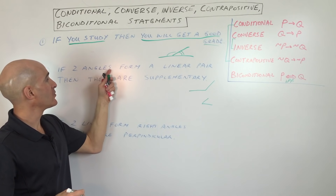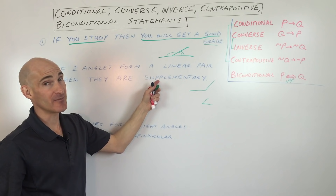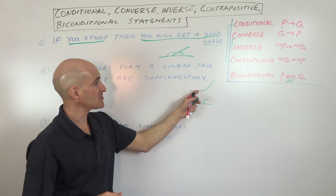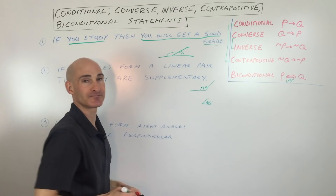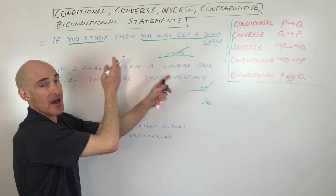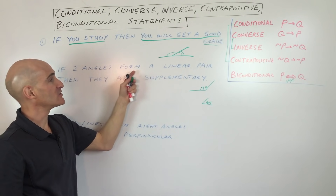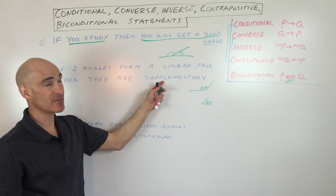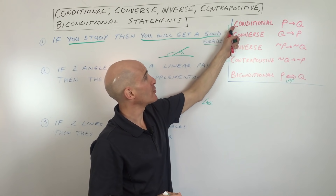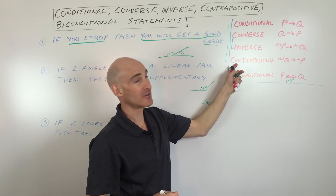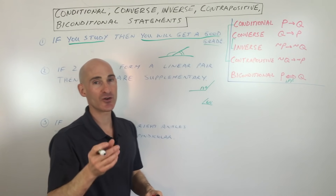The inverse: 'If two angles do not form a linear pair, then they are not supplementary.' That's false — just because they don't form a linear pair doesn't mean they're not supplementary; they could still add up to 180, like 120 degrees and 60 degrees. The contrapositive: 'If two angles are not supplementary, then they do not form a linear pair.' That's true — if they don't add up to 180, they can't form a straight line. Since the conditional was true, the contrapositive is automatically true. The converse and inverse also share the same truth value.